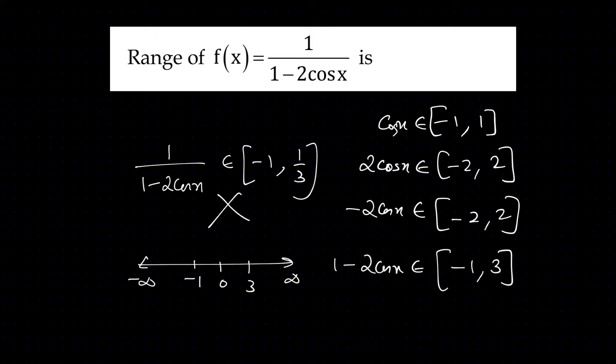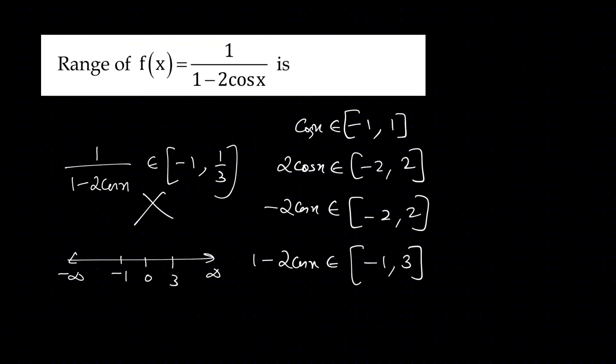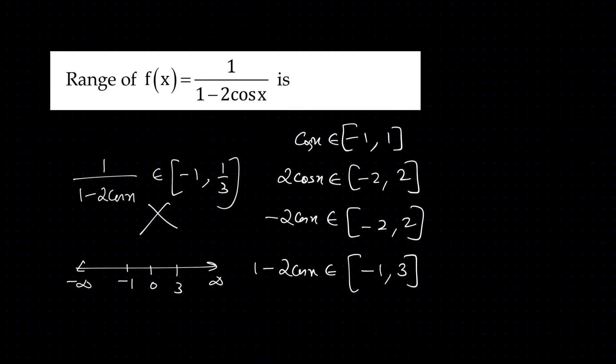Minus 2cos x lies between minus 1 to 3. Minus 3 is between minus 1 to 3.